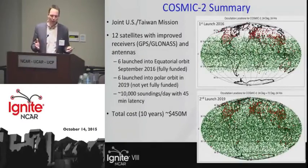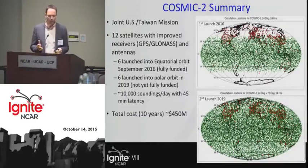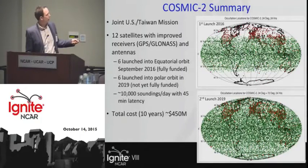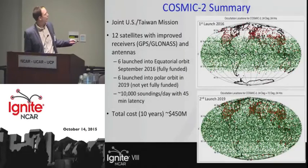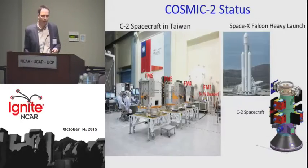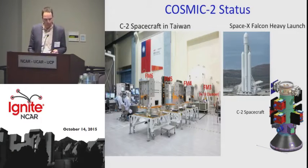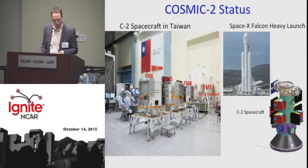COSMIC-2 is a joint U.S.-Taiwan program. We've got six satellites being launched in equatorial orbit, then another six in polar orbit in 2019. This isn't fully funded, but we expect about 10,000 soundings per day. It's really going to revolutionize RO.